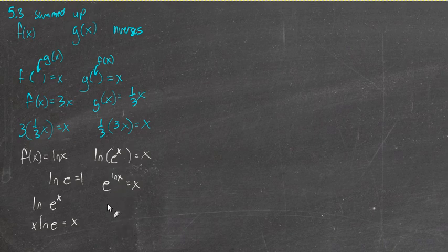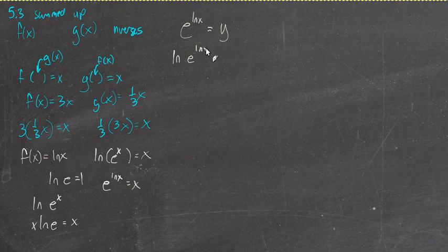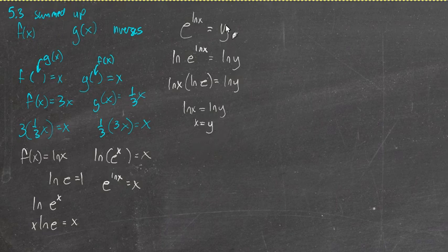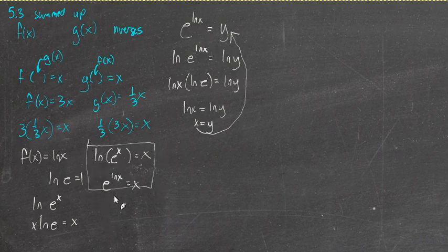Let me prove that e^(ln x) = x. Let's say e^(ln x) equals some unknown value y. I'll take the natural log of both sides. Using log properties, I bring the exponent down: ln(x) times ln(e) equals ln(y). Since ln(e) = 1, we get ln(x) = ln(y), so x = y. So e^(ln x) = x. These two facts together — ln(e^x) = x and e^(ln x) = x — confirm they undo each other. They are inverse functions.